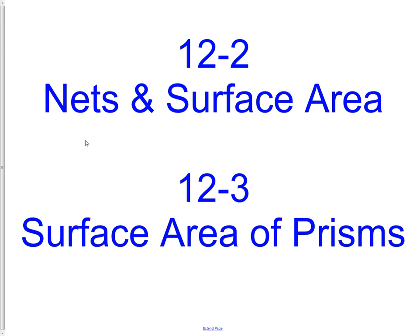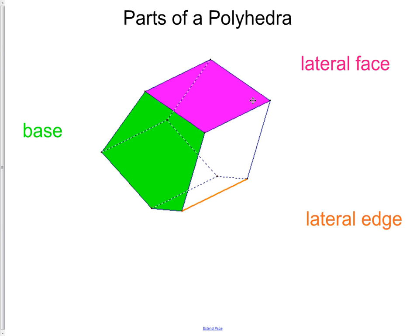Now that we understand some terminology about three-dimensional shapes, it's time to move on to some surface area and area of shapes. The first thing we need to do is understand just the parts of what polyhedras have.